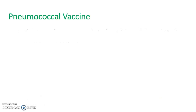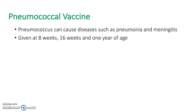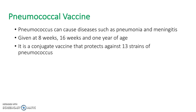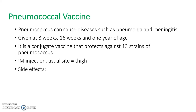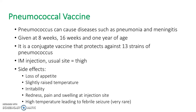The pneumococcal vaccine provides immunity against Streptococcus pneumoniae, which is a common cause of pneumonia and meningitis. It is given at 8 weeks, 16 weeks and 1 year old. The side effects are very similar to those of the 6-in-1 vaccine, but also include a very high temperature that can lead to febrile seizures. However, this is rare.